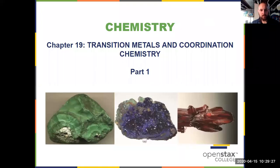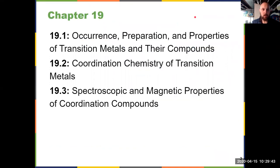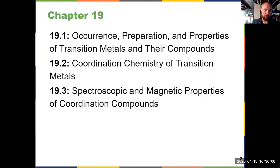In chapter 19, we dive into the world of transition metals and coordination chemistry, talking about that whole middle part of the periodic table that we've largely been ignoring thus far in Chem 2. We'll start in this first video with 19.1, talking about transition metals and their compounds. We're not going to discuss as much about preparation and occurrence as we are properties. In the later videos, we'll talk about 19.2 and 19.3, which are arguably the more important parts of the chapter.